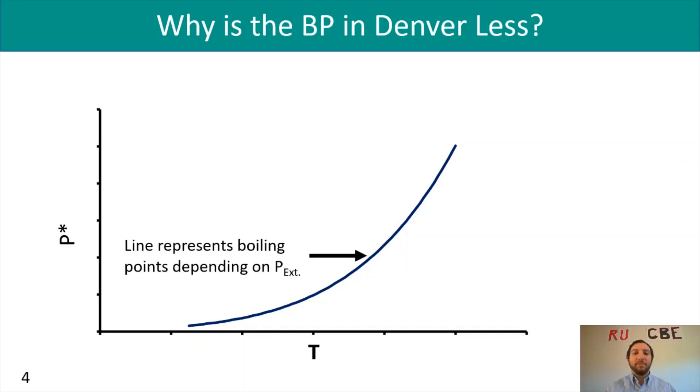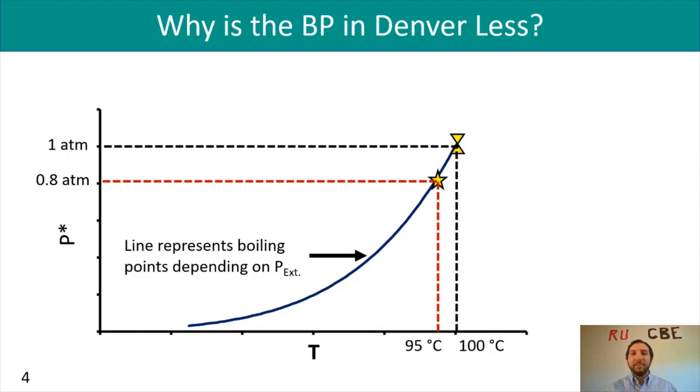That line represents the boiling points depending on your P external. As I mentioned with my example of water boiling in New York City versus Denver, if I had water in New York City, my P external is going to be about one atmosphere. If we go all the way across our chart to that point on the line, we're going to see that we have about 100 degrees Celsius. If we do that same process for Denver, where the atmospheric pressure is about 0.8 atm, go all the way across, find where our line intersects the P star curve, we're going to see that temperature is about 95 degrees Celsius.